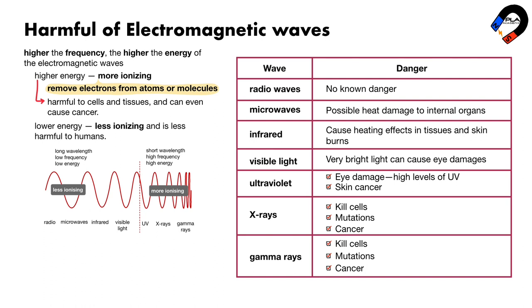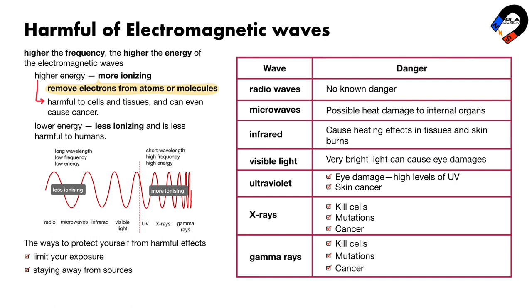It is important to note that the harmful effects of electromagnetic waves depend on the amount of radiation absorbed. A small amount may not be harmful, but a large amount can be very harmful. The risk also depends on the type of tissue exposed — for example, the retina is more sensitive to light than other tissues. The best way to protect yourself is to limit your exposure by avoiding electronic devices for long periods, staying away from sources of strong radiation, and wearing protective clothing when necessary.